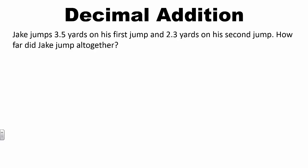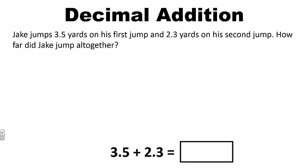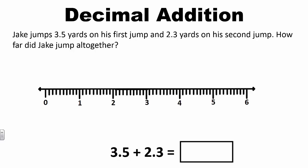Students can also use a number line to represent decimal addition problems. Jake jumps 3 and 5 tenths yards on his first jump and 2 and 3 tenths yards on his second jump. How far did Jake jump altogether? I need to write an equation: 3 and 5 tenths plus 2 and 3 tenths. On the number line, I can show 3 and 5 tenths, then decompose 2 and 3 tenths into 1 plus 1 plus 3 tenths. Adding 1 gives 4 and 5 tenths, adding another 1 gives 5 and 5 tenths, then adding 3 tenths gives a total of 5 and 8 tenths. Jake jumped 5 and 8 tenths yards altogether.